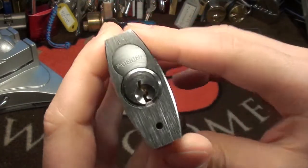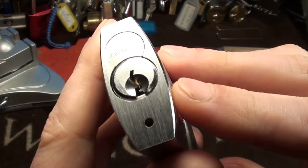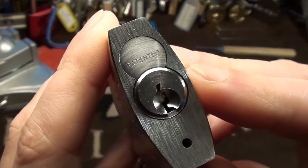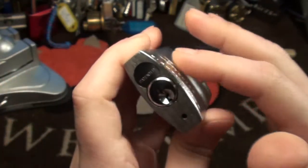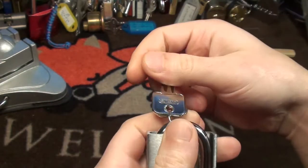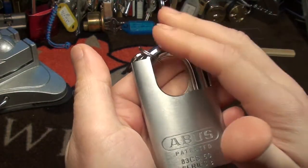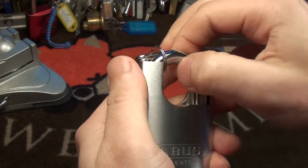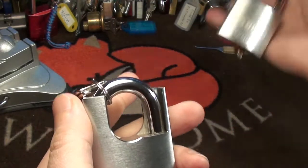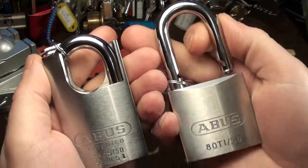Here you can see it has a removable core. Standard ABUS key. It does say 500 on the core. It's really a pretty tough pick. Nice big shackle 9.5 mm, the same as the ABUS 80TI 50.